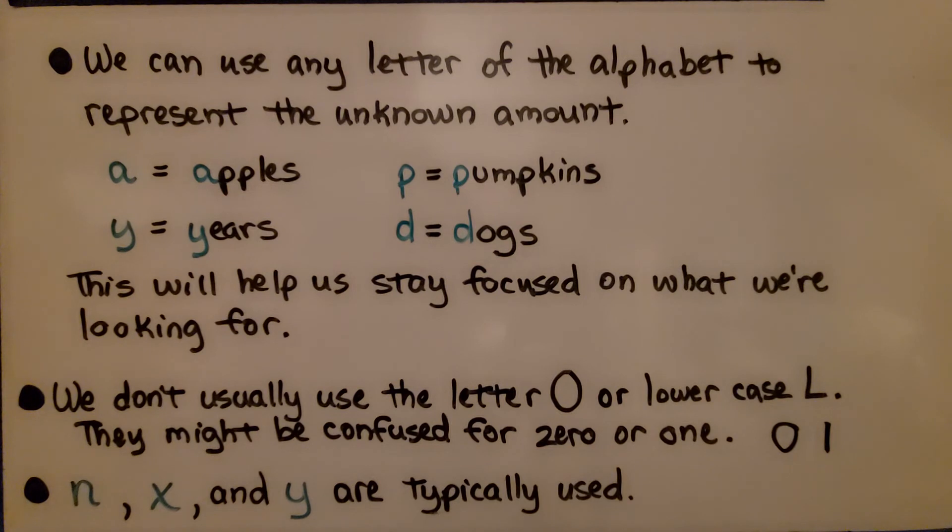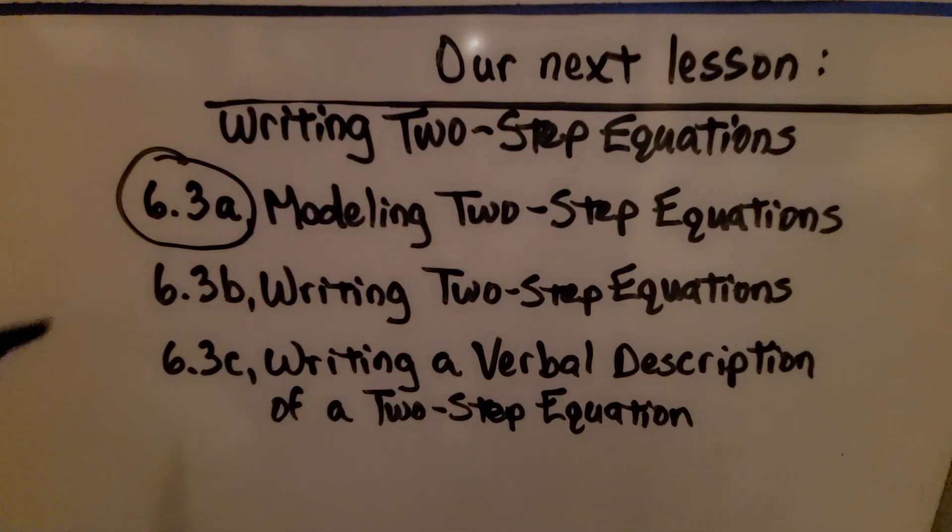You're going to see N, X, and Y used a lot. Now, we can use a lowercase l if we write it in script. You're going to see this in algebra. You're going to see a script lowercase l. And I know some European students are very used to writing a 0 with a line through it like that. And we still would not typically use a letter O for a variable. We're finished with part B. We're going to move on to part C. Writing a verbal description of a two-step equation.